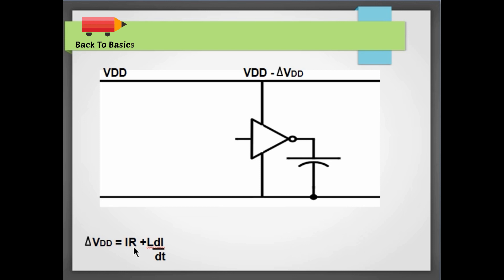And when current changes with respect to time it sees a voltage drop L into di by dt. So collectively the voltage drop seen by this inverter is IR plus L di by dt. But remember this R and L is the resistance and inductance of this VDD rail.